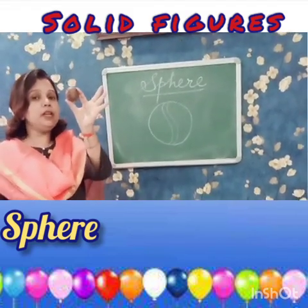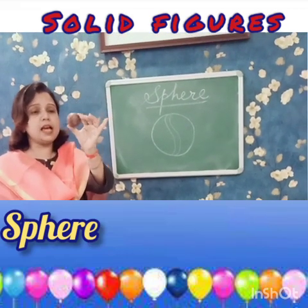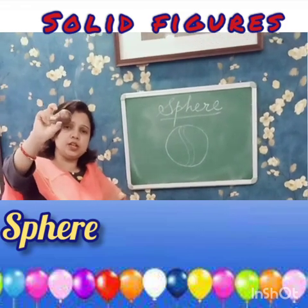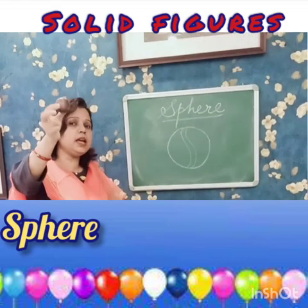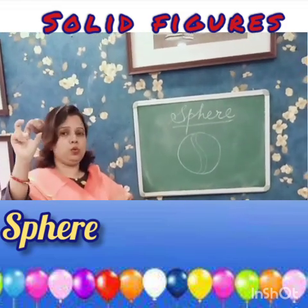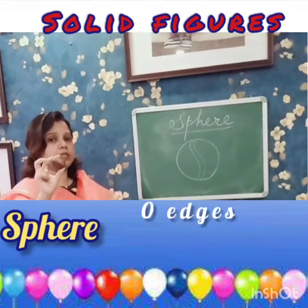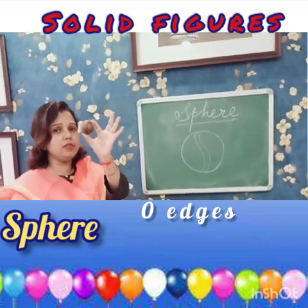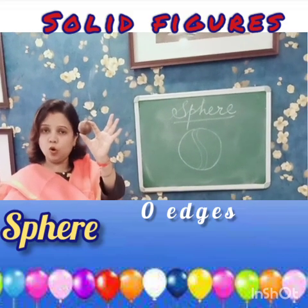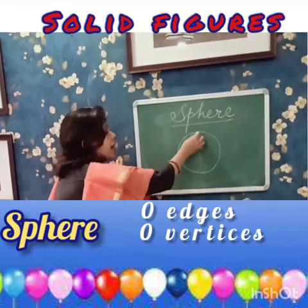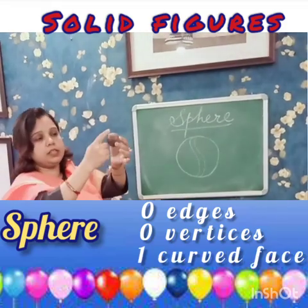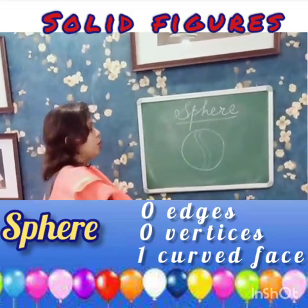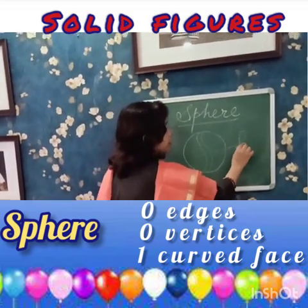It has how many edges, how many sides? In this sphere, do you see any sides, any edges? No — it has no edges, no sides. Is there any vertex? Can you see any vertex? It has no vertices. It only has a curved face — only one curved face. No sides, no vertices, only one curved face.